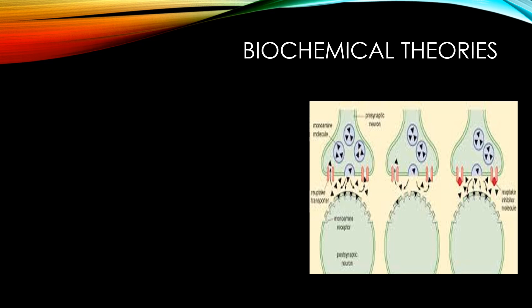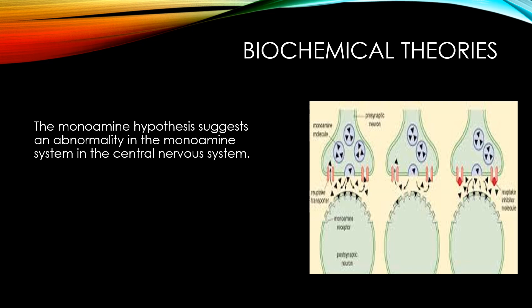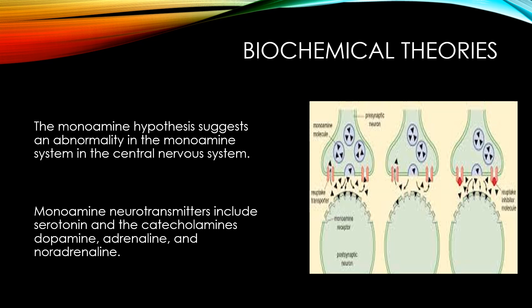There are also biochemical theories. The brain has a lot of biochemicals or chemicals it uses to communicate, known as neurotransmitters. From a psychiatry point of view, the important neurotransmitters are called monoamines — serotonin and catecholamines. In catecholamines there are three types: dopamine, adrenaline, and noradrenaline. If these neurotransmitters are abnormal, it can lead to bipolar symptoms. In depression, serotonin is very low — this is the most common neurotransmitter involved.